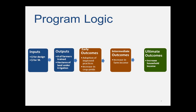Our monitoring data captures inputs and outputs and tracks some outcomes such as adoption of new techniques. When we're looking at inputs, outputs, and even some early outcomes, MCC did very well. The average completion rate of targets was 103% in Ghana, 103% in Armenia, 112% in Nicaragua, and El Salvador and Honduras were all well over 100%, reaching 125% of targets.